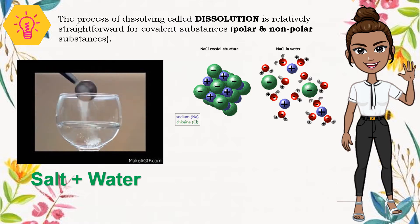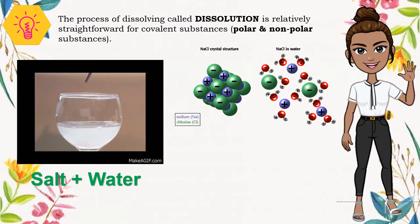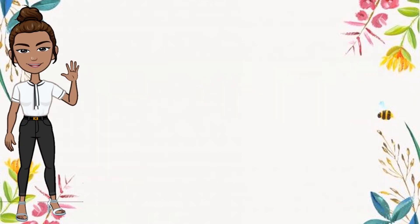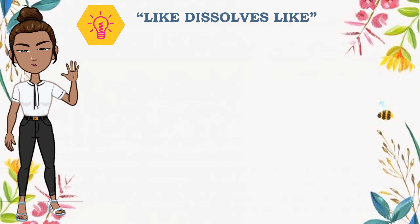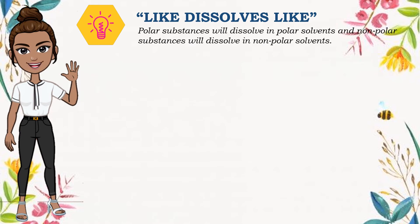The sodium ion will be attracted to the partially negative portion of the water molecule, which is oxygen, in the same manner that the negative chlorine ions are attracted to the partially positive portion of the water molecule, which is hydrogen. Due to this attraction, the positive sodium ions will be surrounded by the partially negative oxygen in water, and the negative chlorine ions will be surrounded by the partially positive hydrogen in water. To allow solubility to occur, the substances should have the same polarity, following the concept of like-dissolves-like.